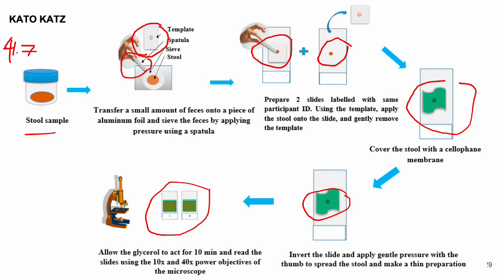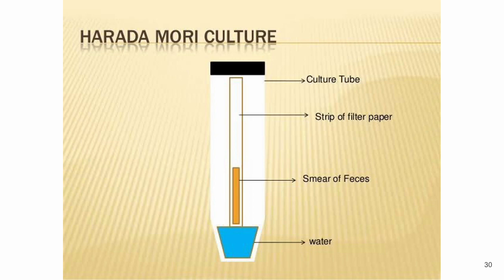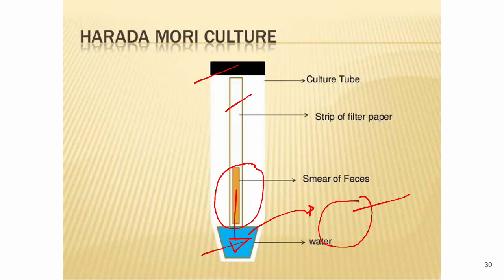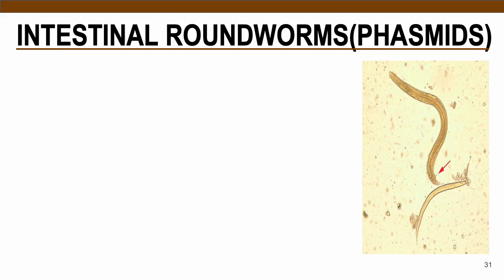For Harada-Mori culture technique, used for cultivating larval forms of hookworm, a strip of filter paper smeared with stool is submerged in a culture tube with water at the bottom. If the feces contain hookworm eggs, the eggs hatch under favorable conditions and larvae migrate into the water. This water containing larvae is then transferred to a nutrient agar plate — the coproculture technique — to grow and observe the larvae.